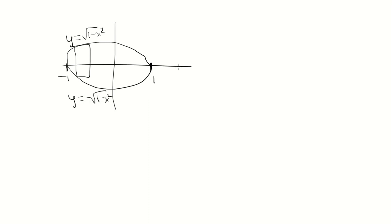So we subtract these and get 2 square root of 1 minus x squared. That's going to be the height and the base of this, so we can just call it the side.